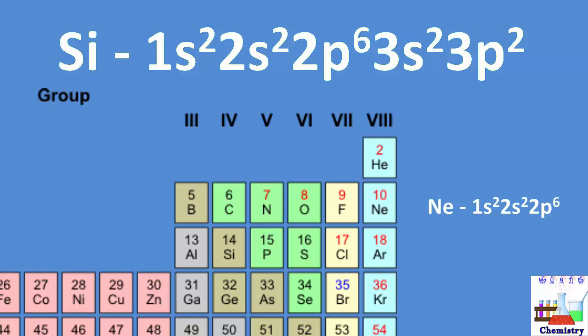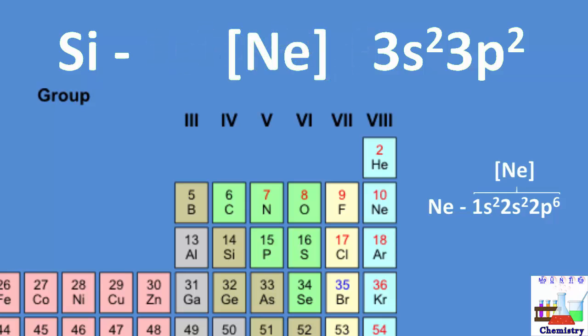This means that silicon's abbreviated electron configuration would start with Ne in square brackets, representing the previous noble gas, Neon, and its complement of 10 electrons. The very next electron begins the 3s sublevel, and we continue filling the sublevels according to Aufbau.